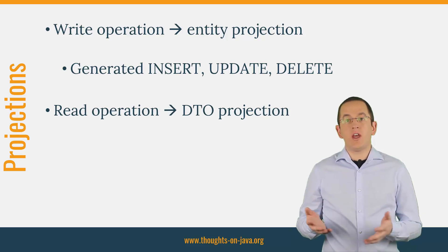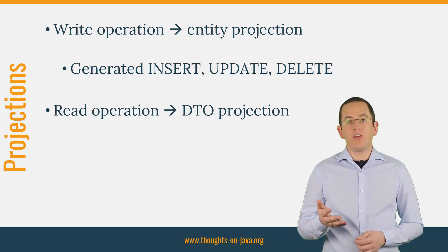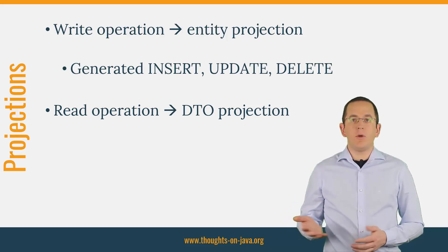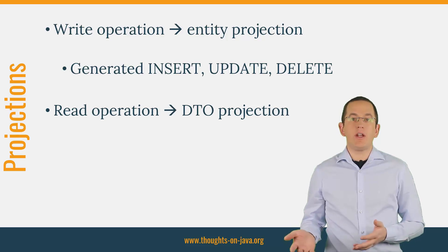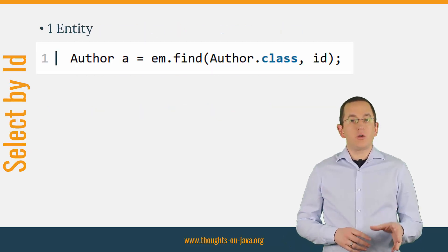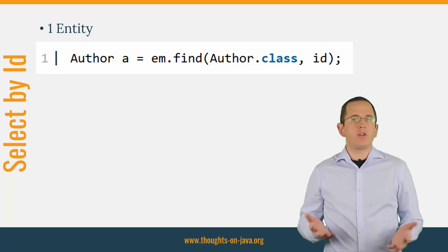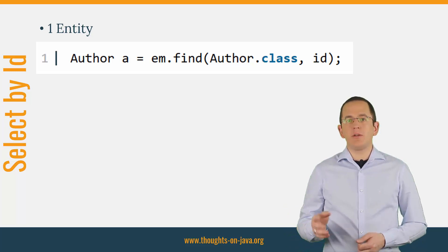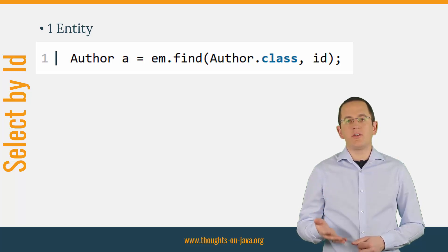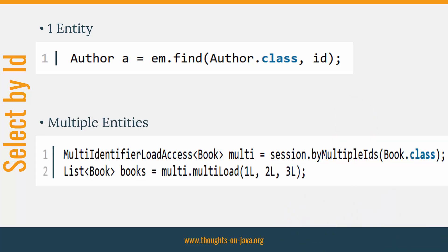After you decide to use an entity projection, you need to choose how to define the query. With entity projections, you have full flexibility — all options to define queries with JPA and Hibernate support entity projections. You could implement your own query to fetch one or more entities by their primary key, but you don't have to. There are more comfortable options available. If you have ever used JPA or Hibernate, you know the find method on the EntityManager interface, which provides an easy way to load one entity by its primary key. On top of this, Hibernate provides an API that enables you to load more than one entity by its primary key — you just provide a list of IDs and Hibernate loads all of them in one query.